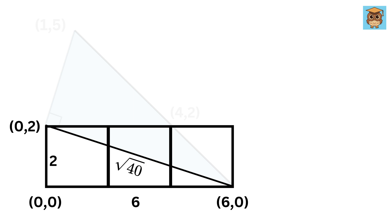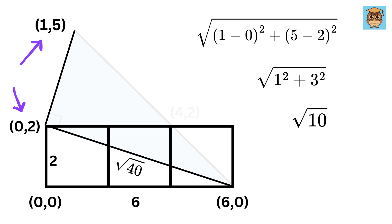Now we have these two points, so we can find out the distance between them, which will be root of one minus zero whole square plus five minus two whole square, or one square plus three square, which will be root ten.